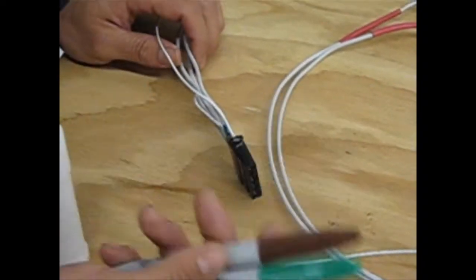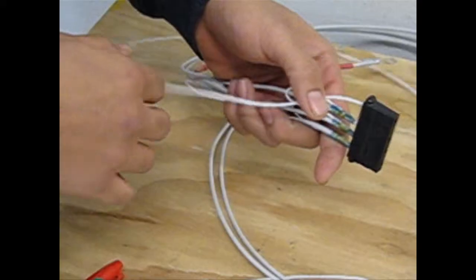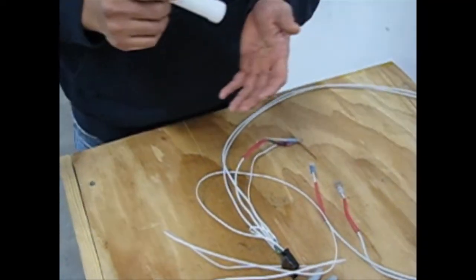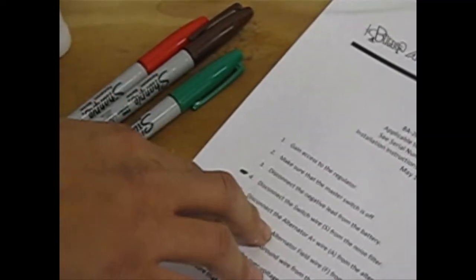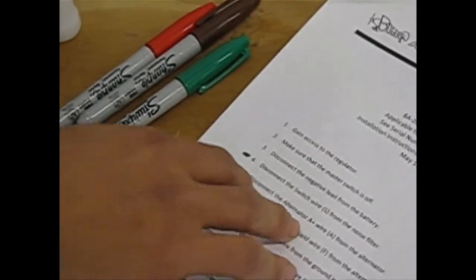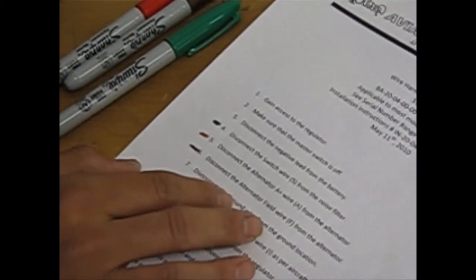I have three different colors, and I'm going to leave one of the wires white. I'm going to try marking each wire according to the colors I have referenced on the instructions. I'm going to mark the switch wire green, the alternator A plus wire red, and the alternator field wire brown.